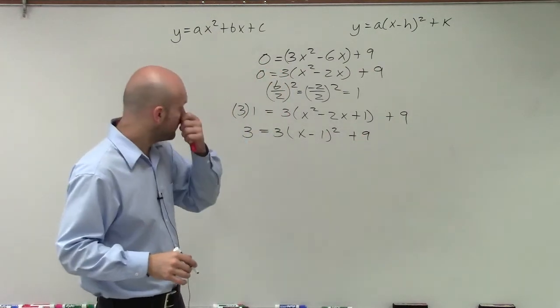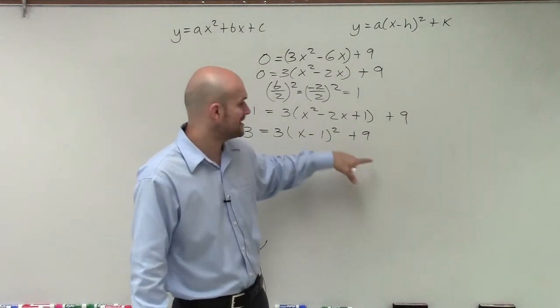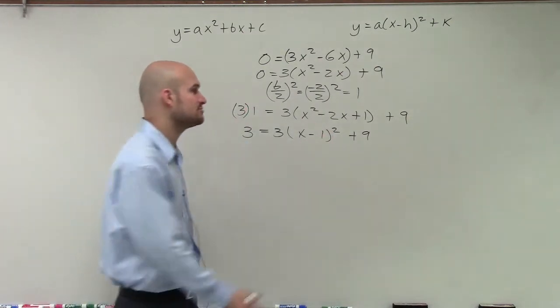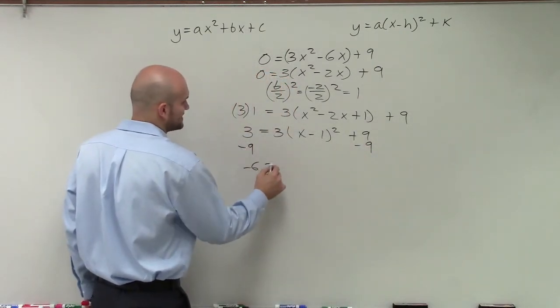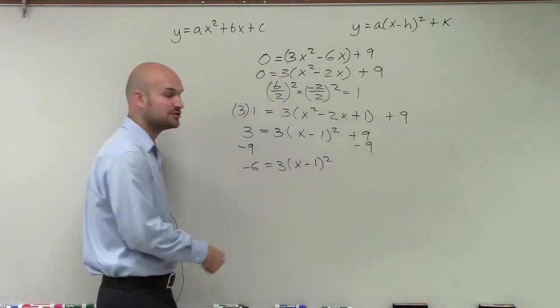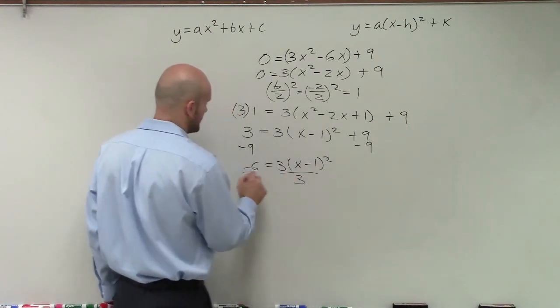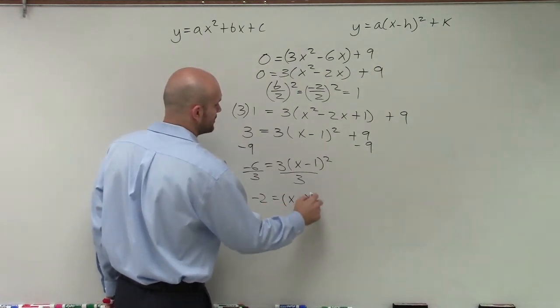All right, so now what we need to do is we need to use our inverse operations. And remember, inverse operations, we have to make sure that we always undo addition and subtraction first. So I subtract the 9. So I have negative 6 equals 3 times x minus 1 squared. Now I undo multiplication and division, so I divide by 3. Therefore I have negative 2 equals x minus 1 squared.